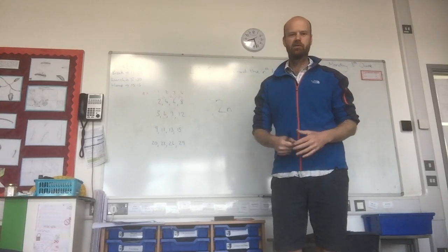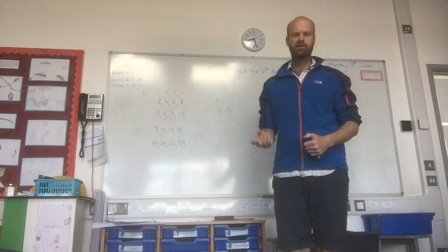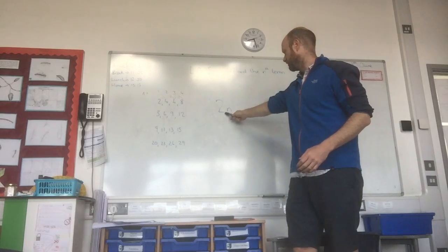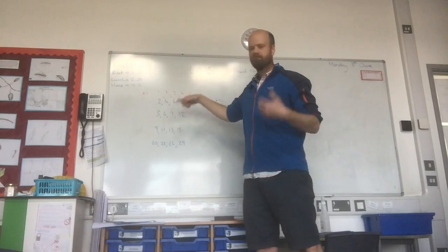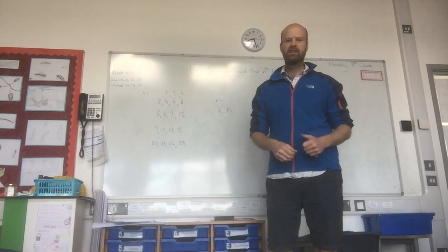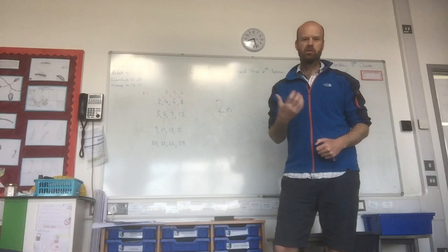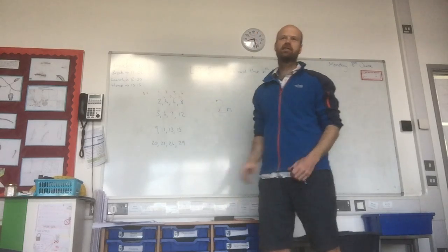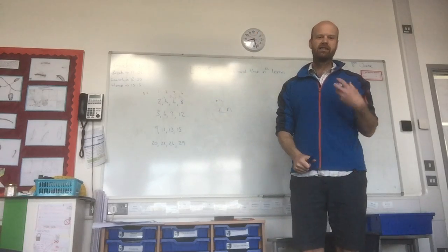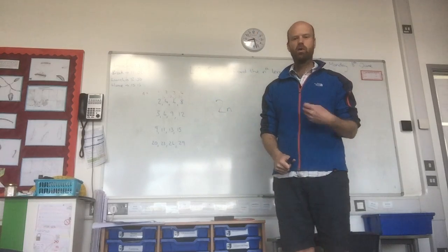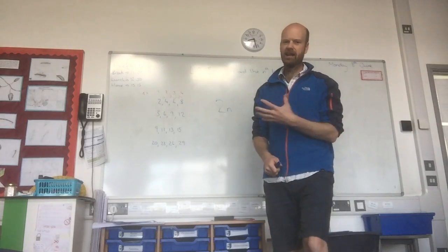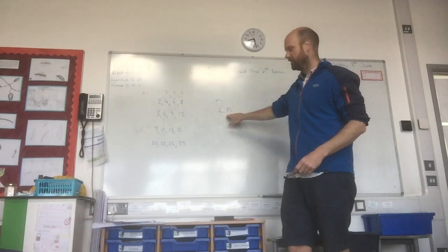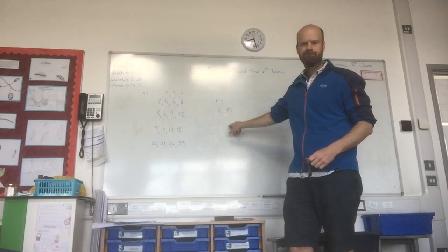The second number in the sequence, well, that would be n equals 2, and in this case 2n is 4. The third number in the sequence is n equals 3, and so in this case would be 6. We can see that this is a one-function sequence; I don't have to make any further adjustment. The formula is simply 2n.